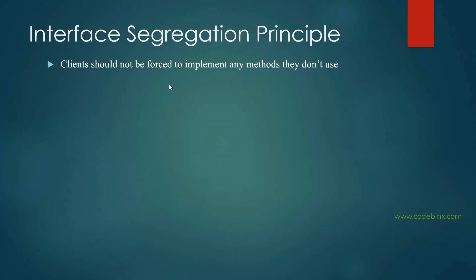Interface Segregation Principle: the client should not be forced to implement any method they don't use. The user should only implement the methods they actually want to use. For example, in an e-commerce site, not every client needs to implement every method — it should be flexible.